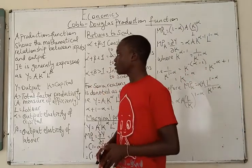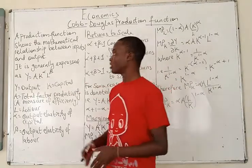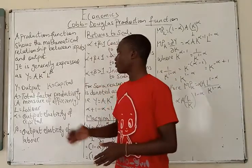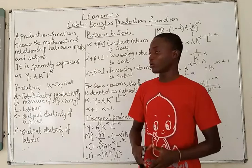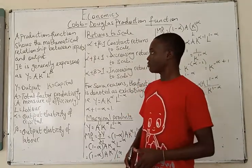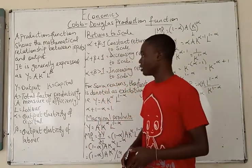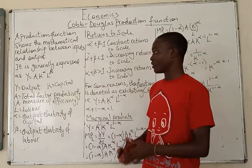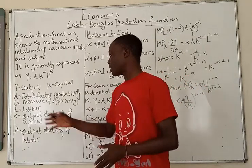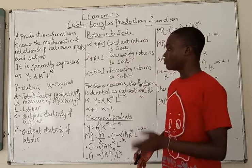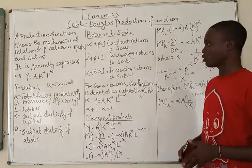A Cobb-Douglas Production Function is simply expressed as: Y equals A, K to the power alpha, L to the power beta. Where Y equals output, K is capital, A is the total factor of productivity — which is a measure of efficiency — L is labor, alpha is output elasticity of capital, and beta is output elasticity of labor.